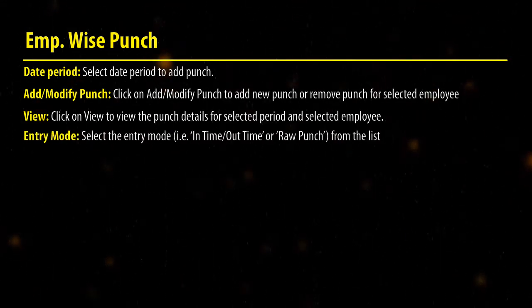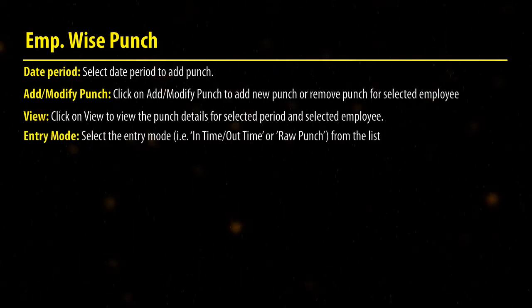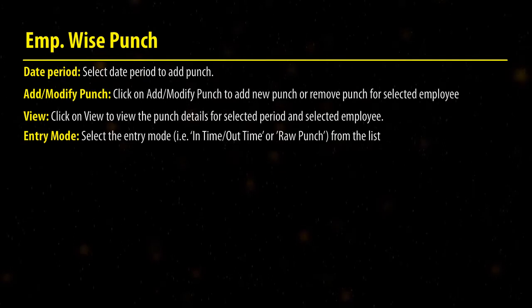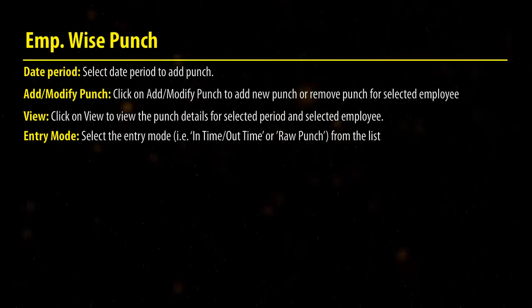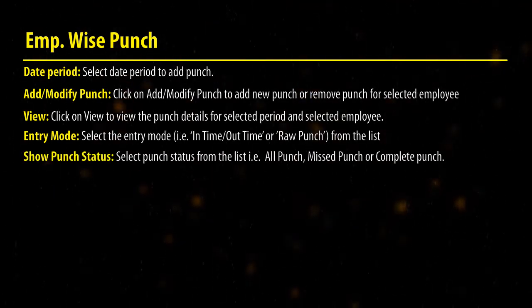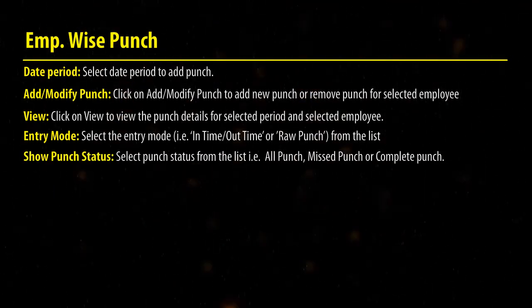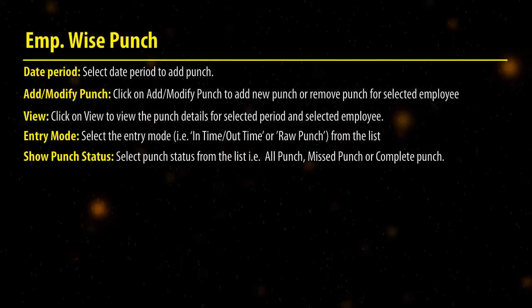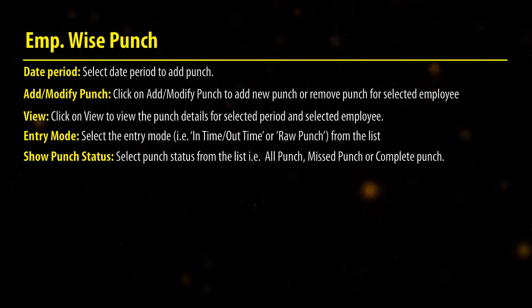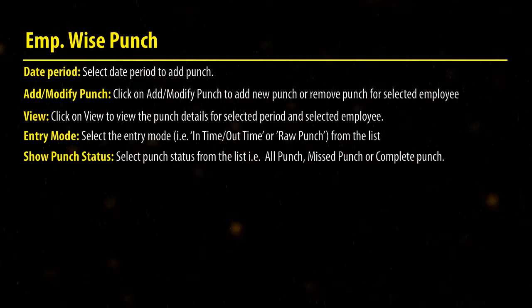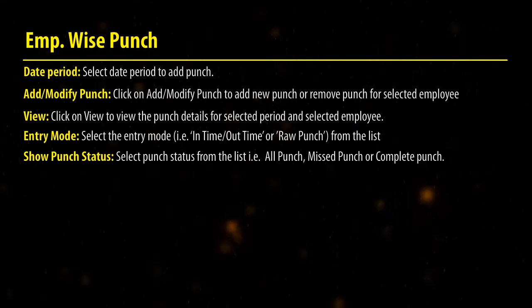Select the Entry Mode — that is the In Time, Out Time, or Raw Punch — from the list. Select the Punch Status from the list: that is All Punch, Missed Punch, or Complete Punch.